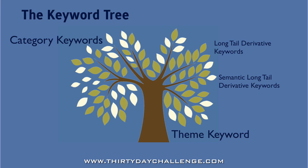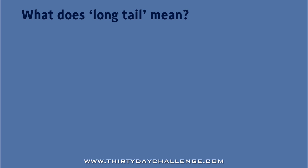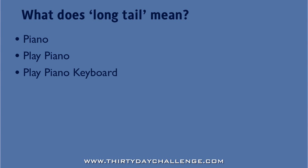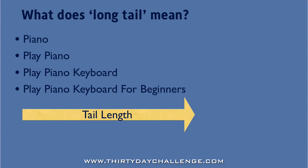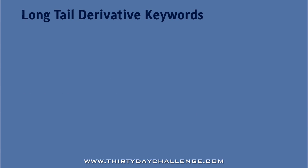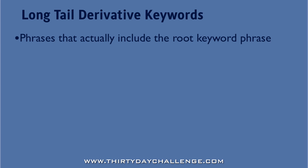So let's take a look at each of these new keyword types in more detail. In case you're wondering what the term Long Tail actually means, a Long Tail keyword is simply a phrase that contains several words — the more words in the phrase, the longer the tail. Long Tail Derivative Keywords are those that actually include the root keyword phrase. The easiest way to understand this is to look at an example.